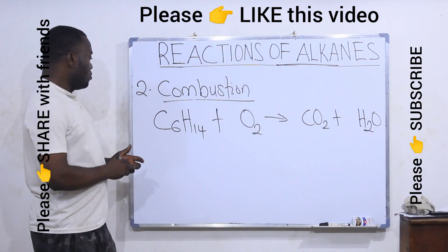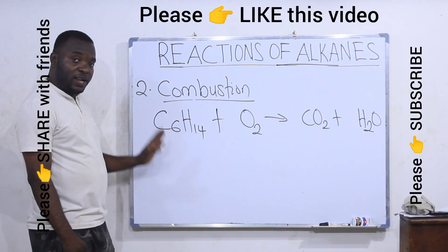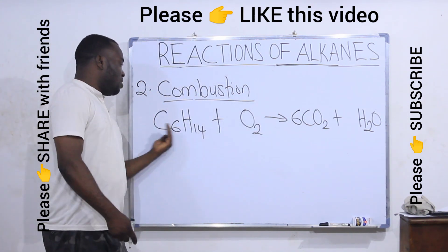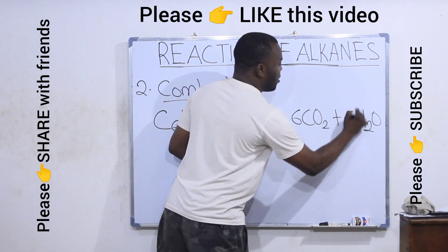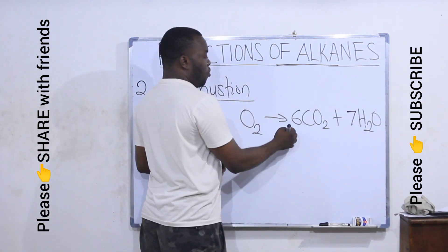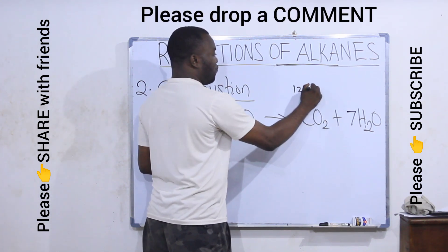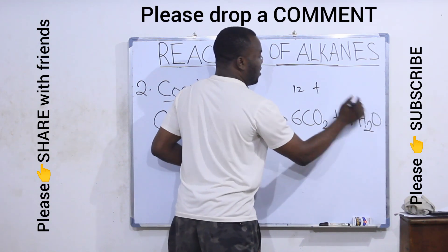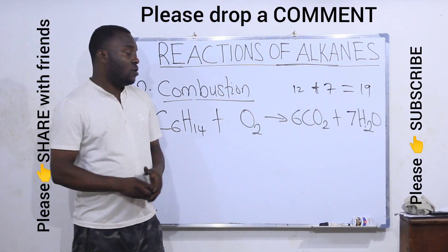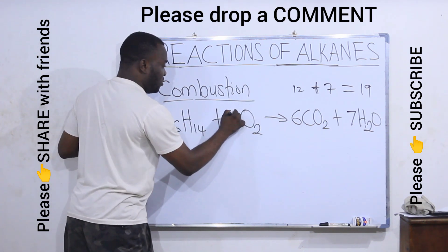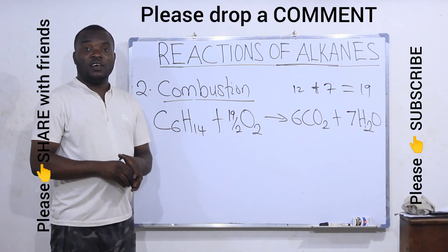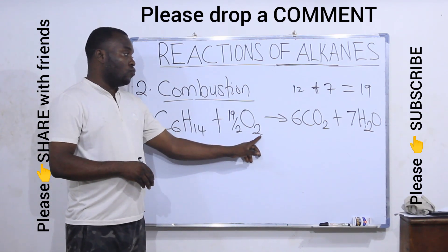Let's balance the equation. Balance carbons first: on the left I have six carbons, so I put six here. Balance hydrogen: on the left I have 14 hydrogens, so I put seven here so that seven times two is 14. Now balance oxygen: on the right, oxygen from CO2 is six times two = 12, plus oxygen from water is seven, giving 19 total. Since 19 is an odd number, I write it as 19 over two. This balances the equation, because 19 over two times two gives 19.